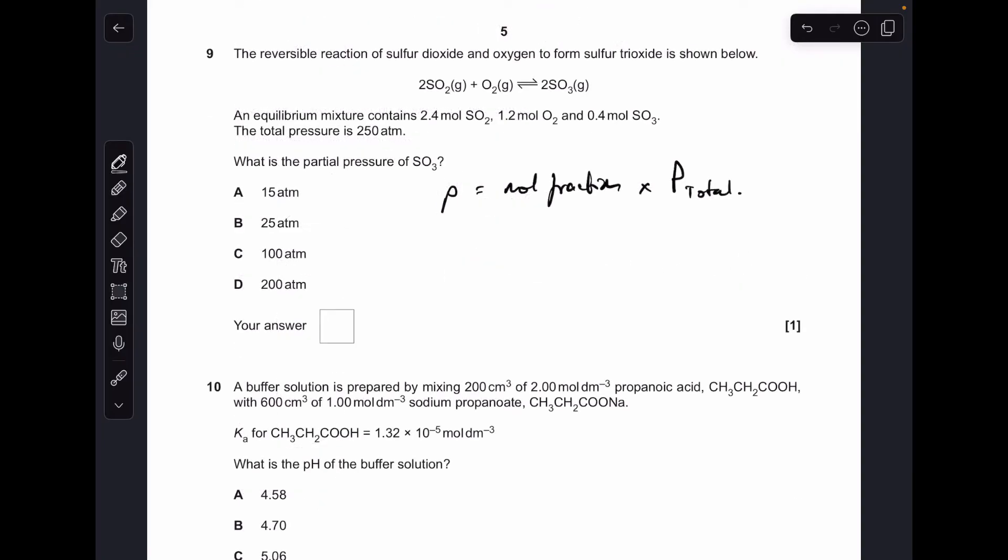Question 9. How do you work out partial pressure? Well, you need to know the mole fraction, which you then multiply by the total pressure. So what we need to do here is work out the mole fraction of the SO3. Moles of SO3 is 0.4. We divide that by the total moles, which is 4. So the mole fraction is 0.1, which we multiply by 250, which is going to give us 25. So option B was the answer.